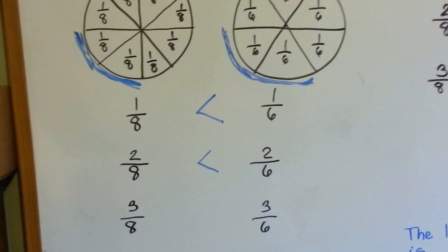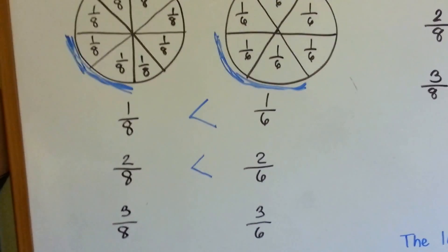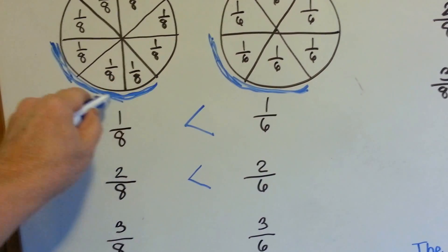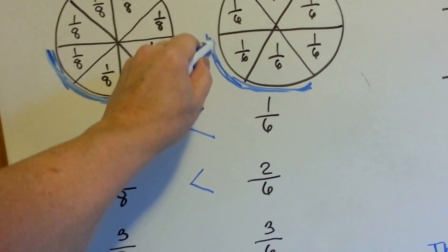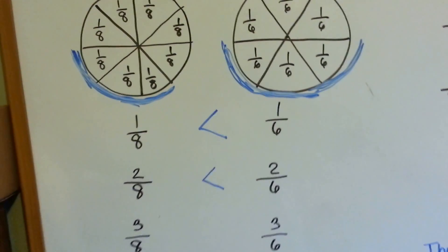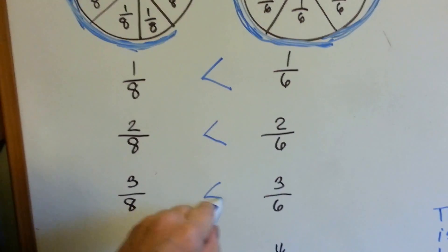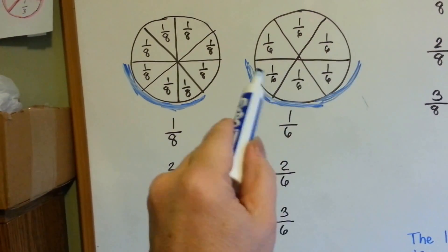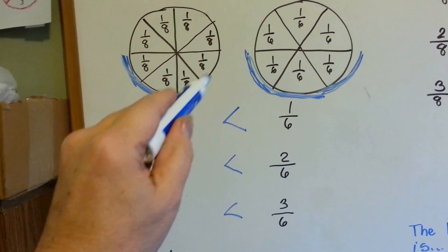Now which one would be bigger — 3 eighths or 3 sixths? Here's 3 eighths. Here's 3 sixths. The 3 sixths is bigger. The 3 sixths is taking up half the circle, and this one hasn't quite made it to the half mark yet.